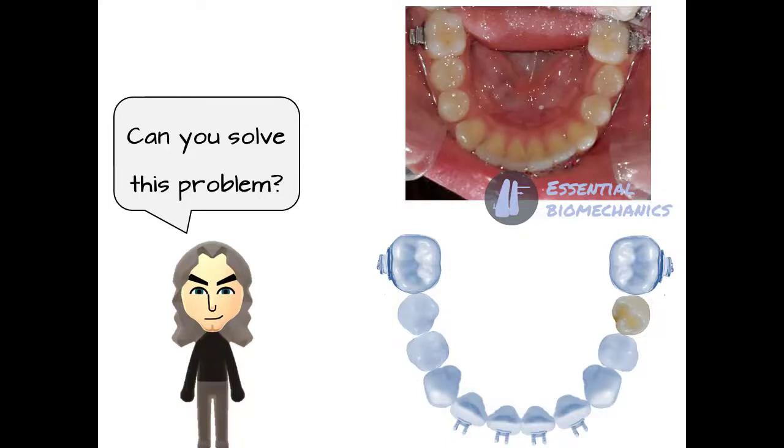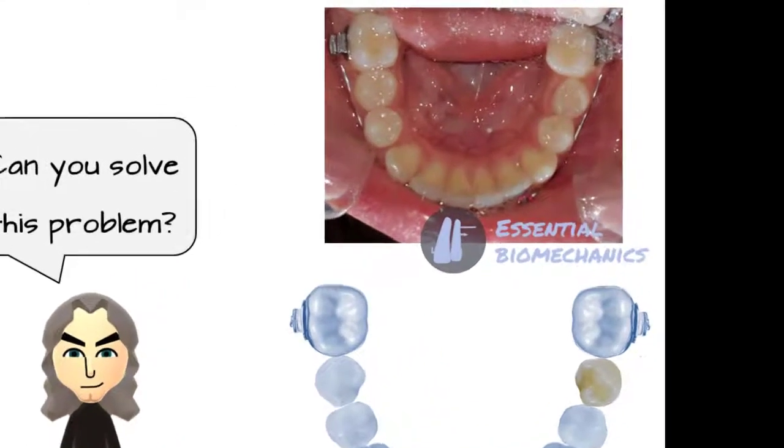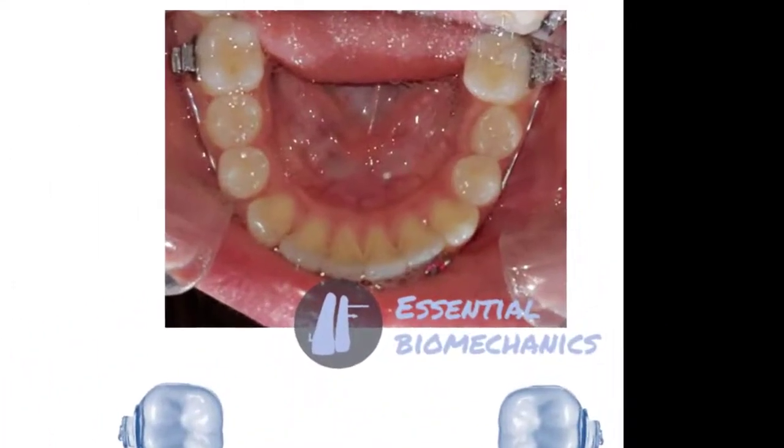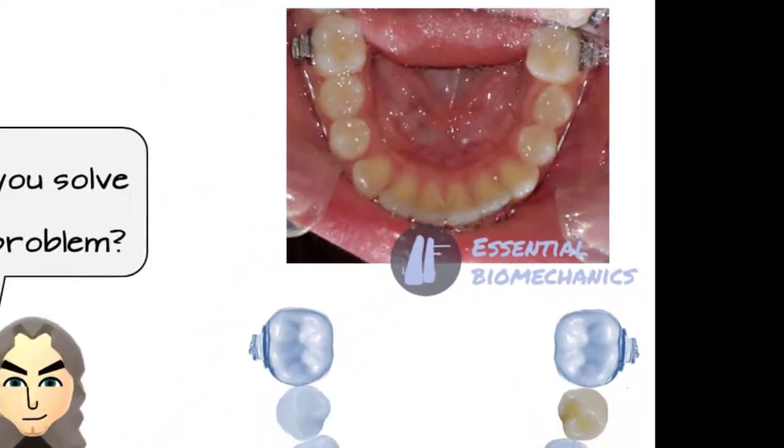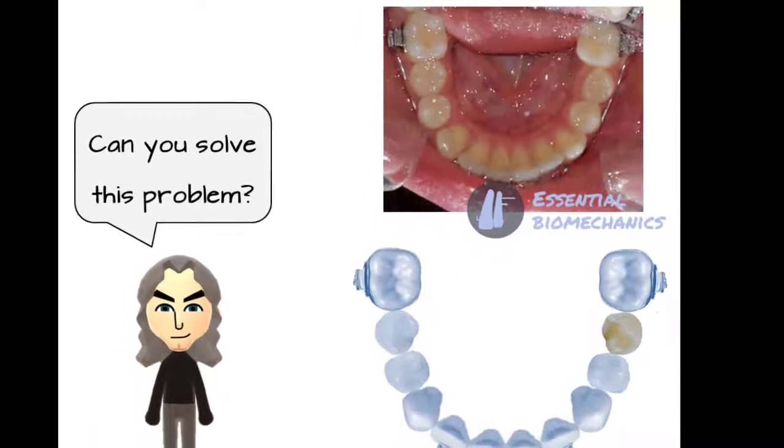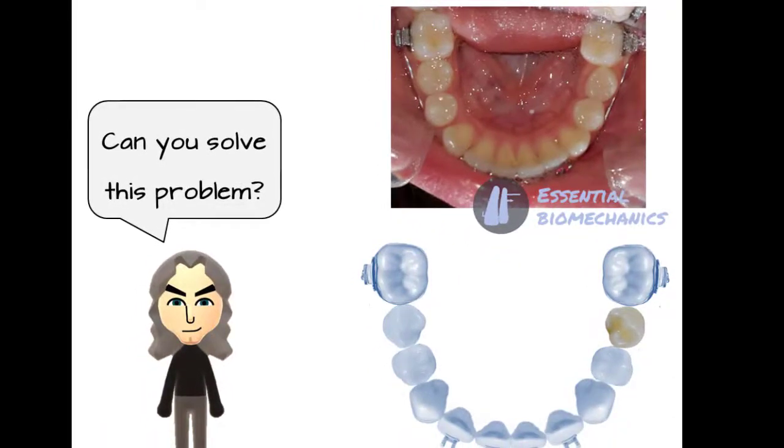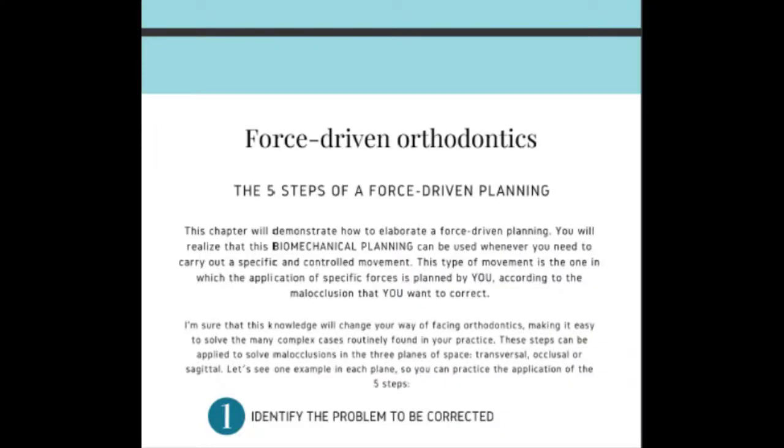In the first case, the avatar of Sir Isaac Newton presented a very simple case of a rotated premolar, as you can see in this picture. The aim of this kind of exercise is to develop a line of reasoning for performing a specific tooth movement by applying the five steps of a force-driven planning.